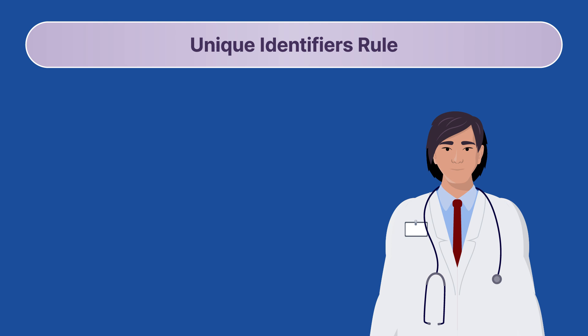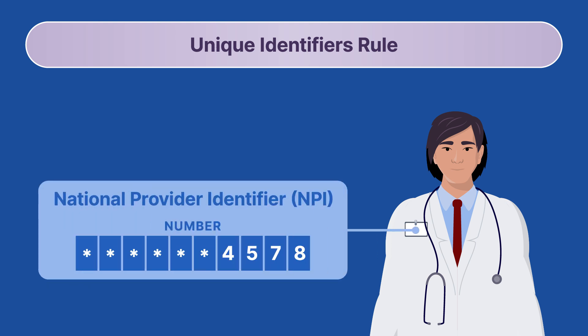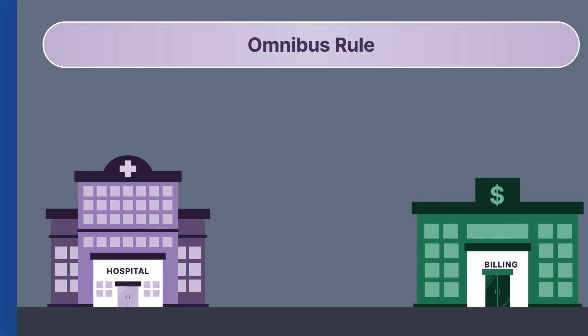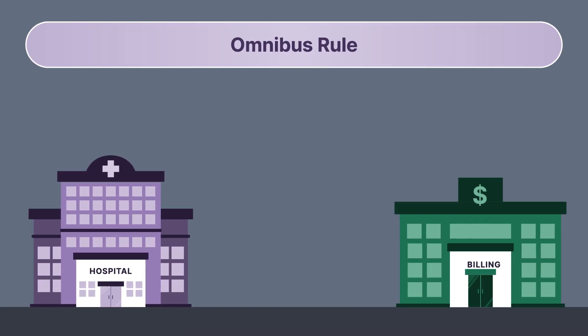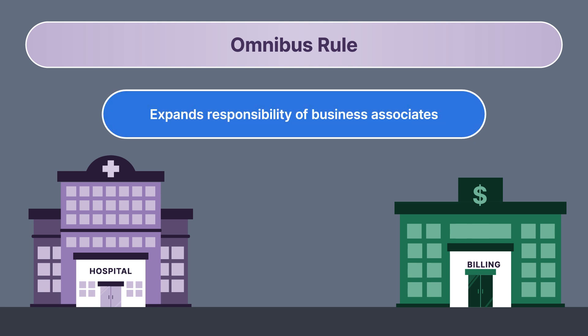The Unique Identifiers Rule was created to simplify the administrative process around providing health care. This provision required the adoption of a National Provider Identifier (NPI) to serve as a standard unique identifier for health care providers for use in the health care system. This means that every health care provider in the country has a unique 10-digit number that distinguishes them in the health care system, simplifying transactions and communications between entities. In 2013, the Omnibus Rule was implemented, impacting aspects of the privacy, security, enforcement, and breach notification rules. A key part of the Omnibus Rule was expanding the responsibilities of business associates, so if a hospital uses a third-party billing company, that company is also liable for ensuring the protection of patient data.